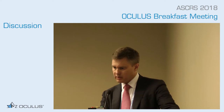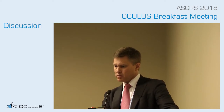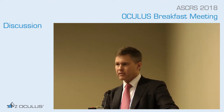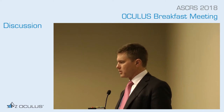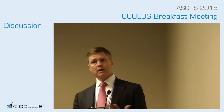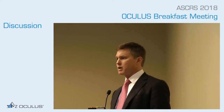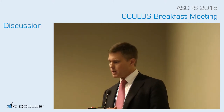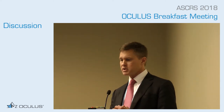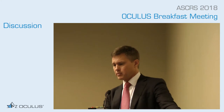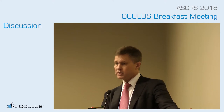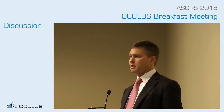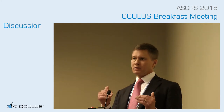We have two diopters of cylinder against the rule; spherical aberration is plus 0.385 — perfect for any of the multifocal toric lenses on the market today because they're aspheric. Alcon's lenses are around plus 0.16 to plus 0.18 depending on the paper; the J&J lens is minus 0.27. Great case for a toric lens implant. RMS is 0.557 — low enough to use a multifocal product. Chord mu is 0.27 — totally normal.